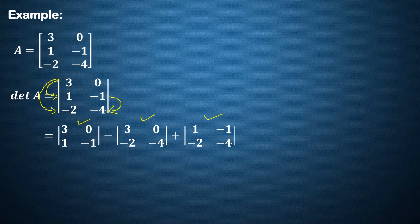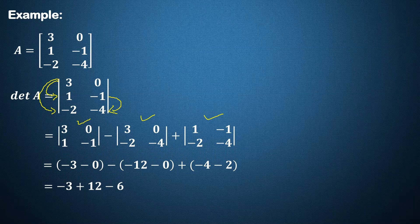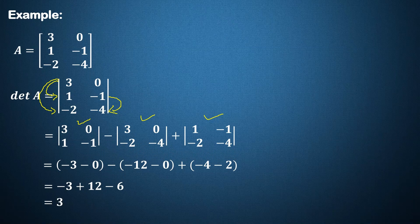Now these are 2 by 2 determinants which can easily be evaluated. So after simplification we get the determinant of this non-square matrix as 3.